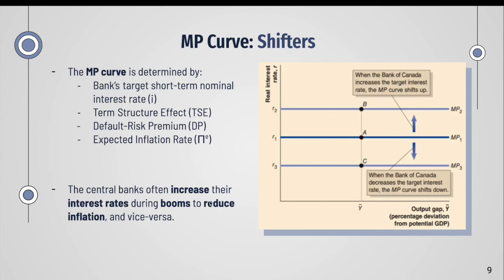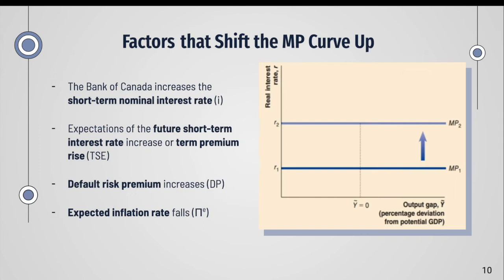The factors that shift the MP curve up include: the Bank of Canada increases the short-term nominal interest rate; expectations of future short-term interest rates increase or the term premium rises; the default risk premium increases; or the expected inflation rate falls. The reverse of each factor applies when the MP curve shifts down.